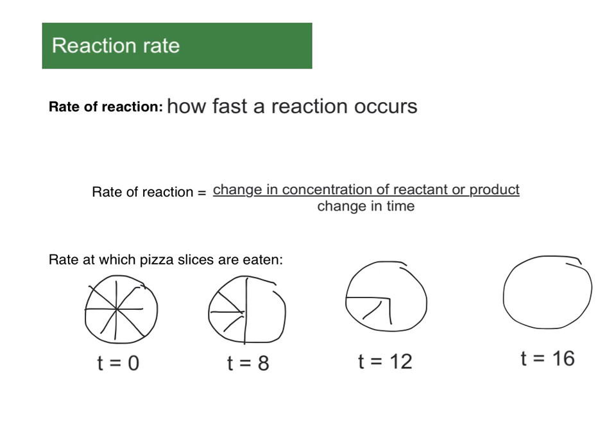So if we go from T equals zero to T equals eight, our change in time is going to be eight minutes and our change in pizza is going to be four slices. So four slices have been consumed from time zero to time eight. So if we do four divided by eight, that's a rate of a half a slice per each minute.